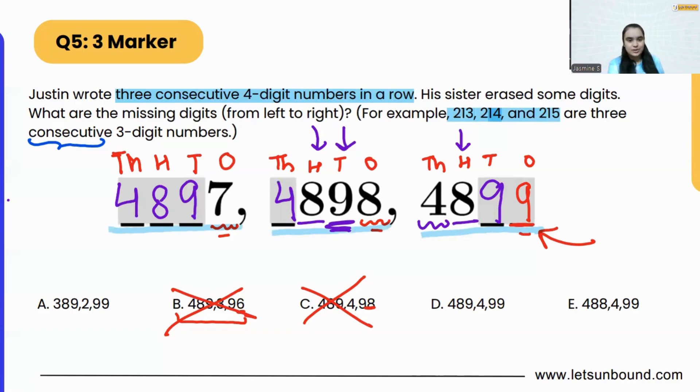So let's see which one is going to be our correct answer. 4, 8, 9, 7, 4, 8, 9, and then 9. That means our correct answer is option D.